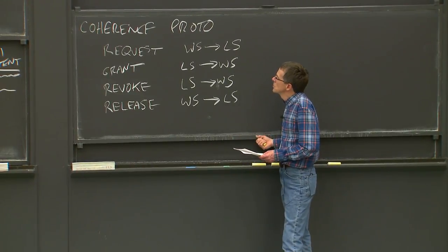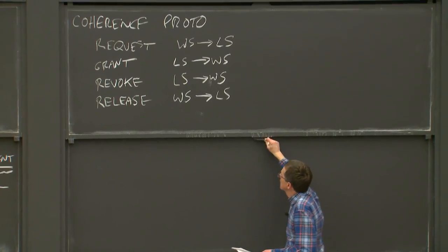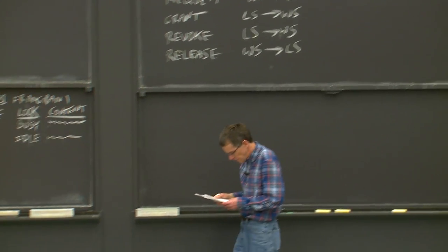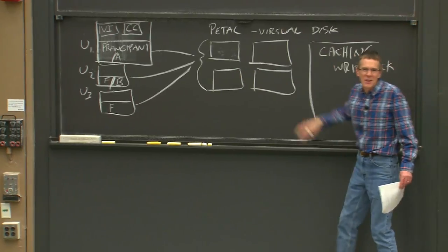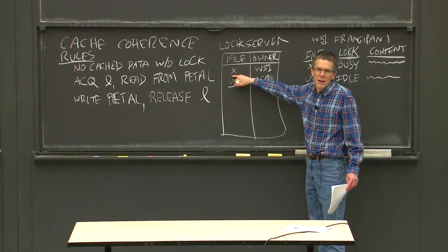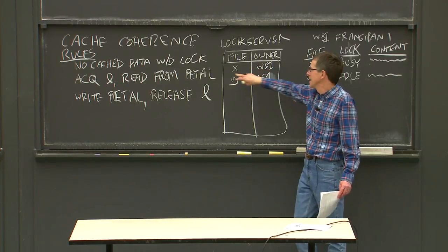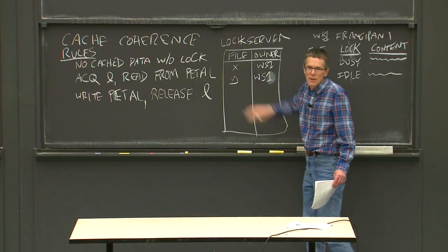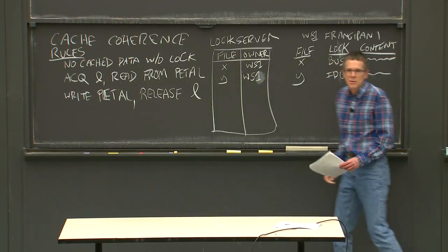This is the coherence protocol Frangipani uses — simplified, since what's missing is that locks can be either exclusive for writers or shared for read-only access. Just like Petal is a block server that doesn't understand file systems, the lock server also knows nothing about files or directories — it just has a table with opaque IDs and who owns those locks. Frangipani uses Unix-style inode numbers as lock identifiers.